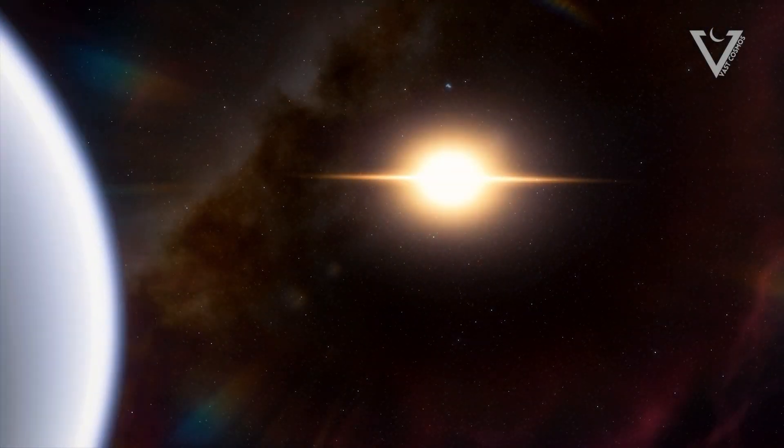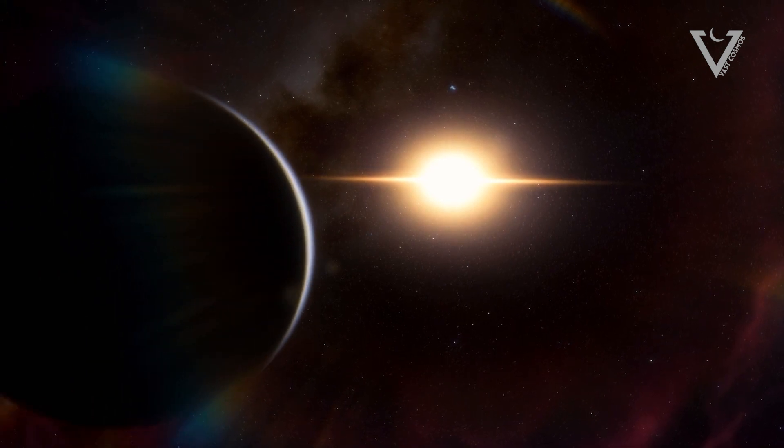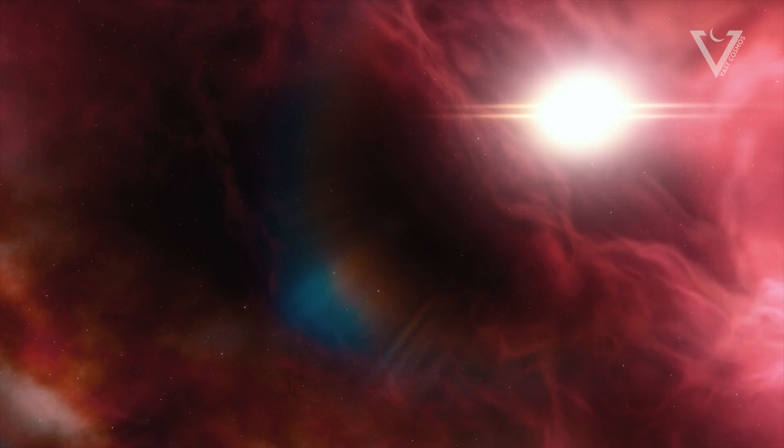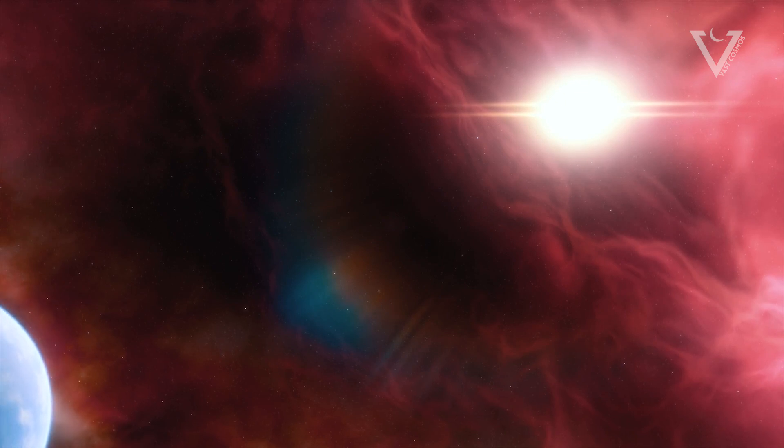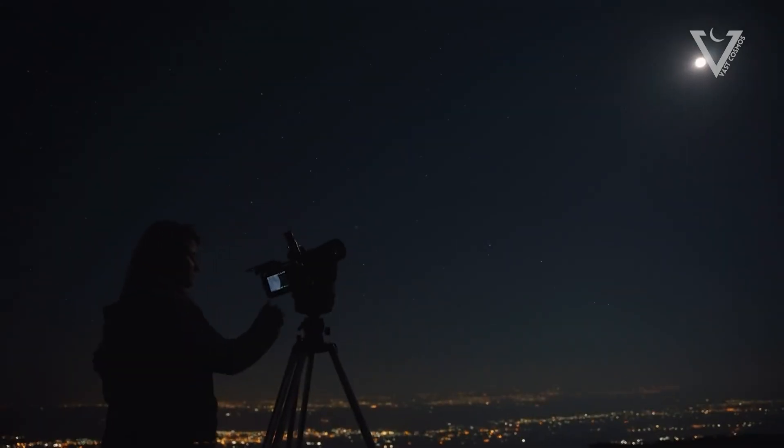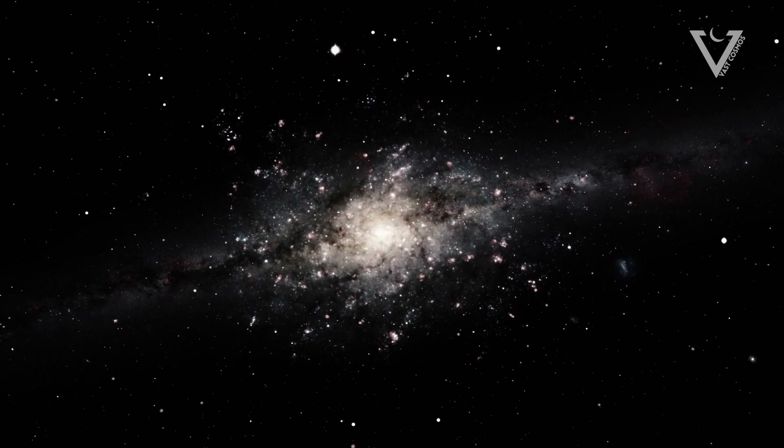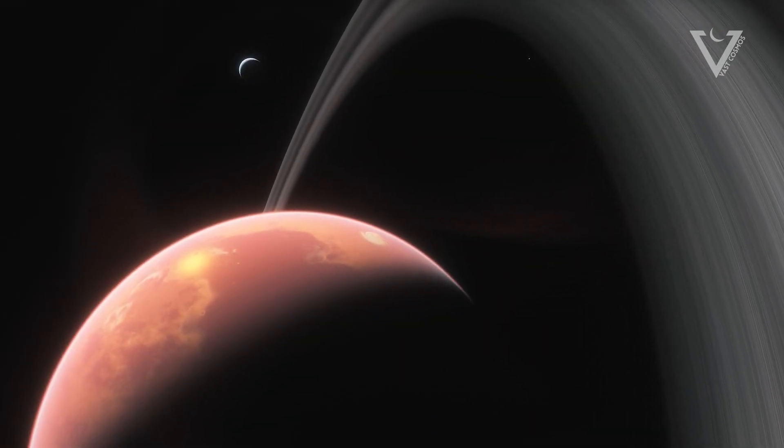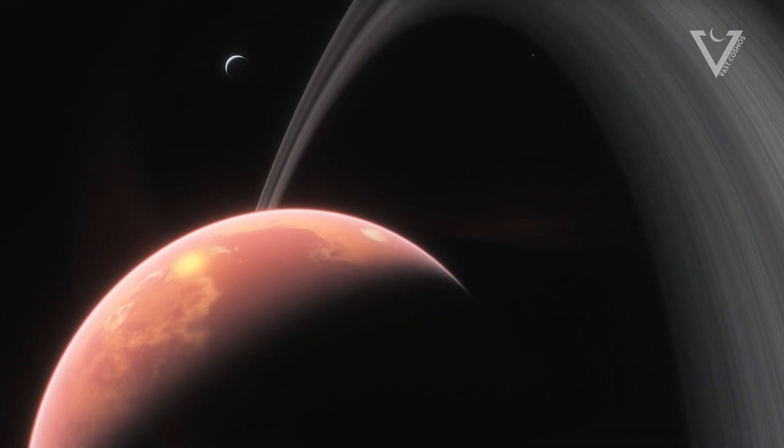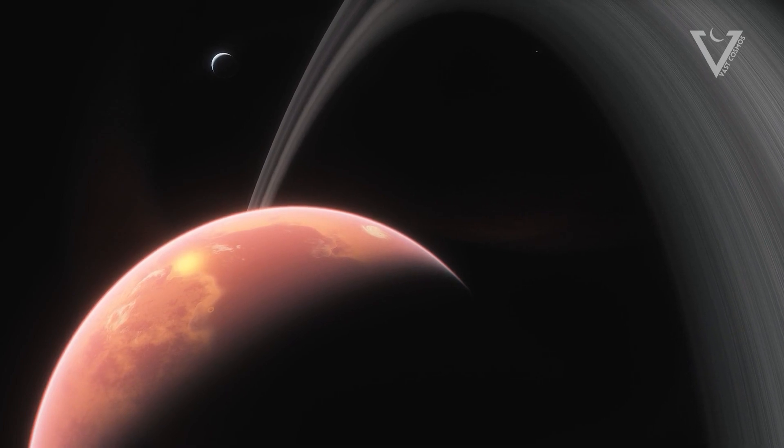Our journey concludes with the enigmatic Fomalhaut b, formerly known as Dagon, a planet that bewildered astronomers with its unconventional behavior. Initially identified through the Hubble telescope in 2004 as a colossal debris disk, suspicions of a massive exoplanet emerged. However, subsequent observations painted a perplexing picture, challenging conventional notions.